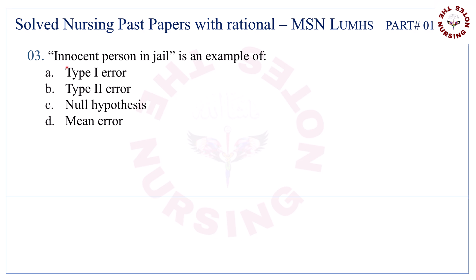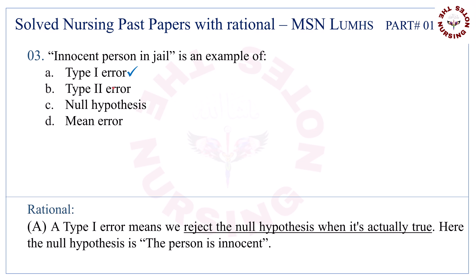Question number three: an innocent person in jail is an example of. Correct answer is A, type 1 error.